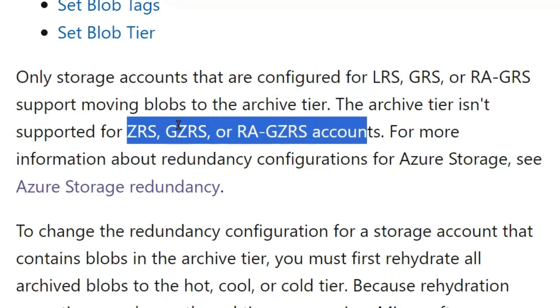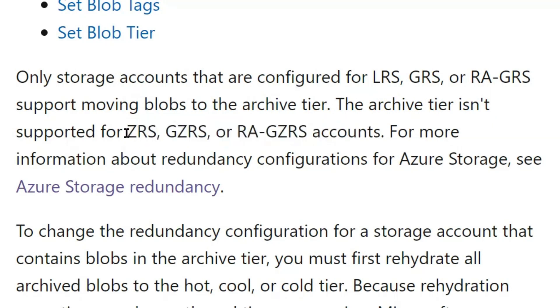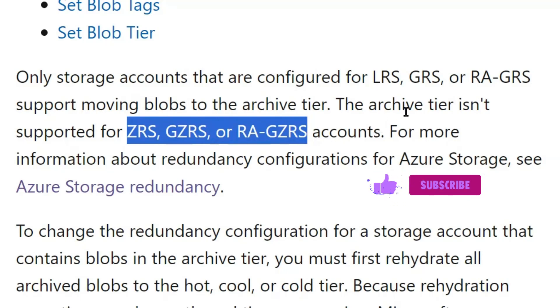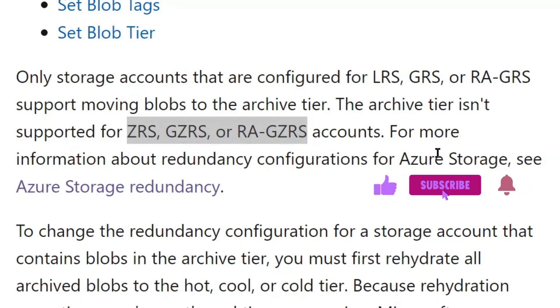Therefore, keep in mind that wherever 'Z' appears in the redundancy option, that account would not support the archive tier. Let's go back to the question.